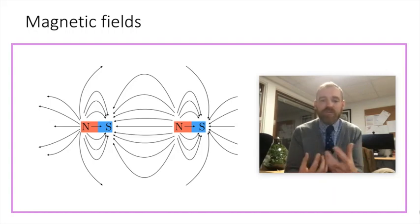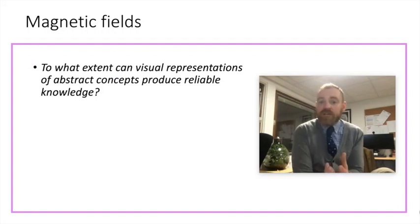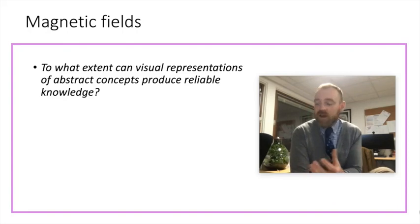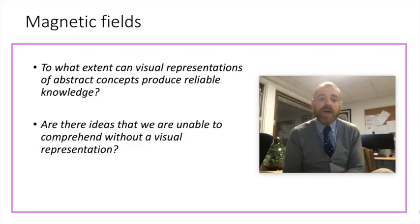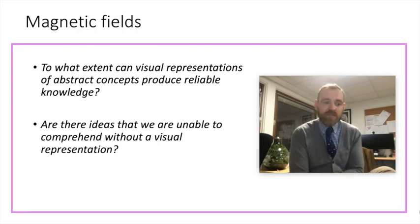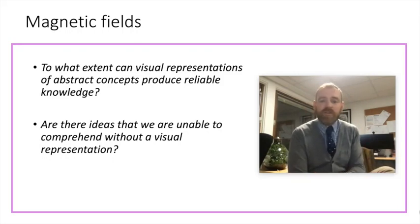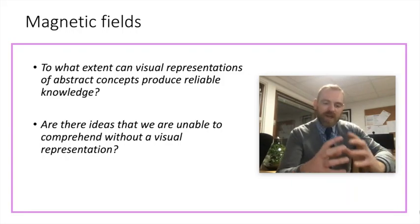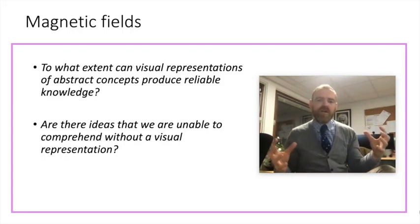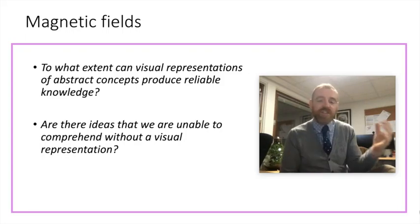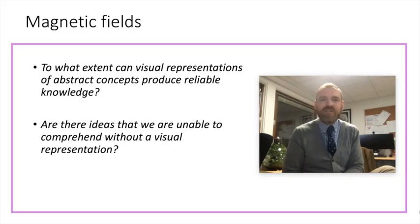So this is fantastic, we can extract some great questions from this and send the students away with those questions. So asking to what extent visual representations of abstract concepts can produce reliable knowledge is fantastic. Or we could flip that around and say, are there ideas which we are unable to comprehend without a visual representation? And from that point, you can then go further and say, well, what about ideas that it's impossible to represent visually? Does that mean it's impossible for us to understand? Questions about multiple dimensions would fit into this. So from that one example of a magnetic field, we've extracted some really quite big questions that can be related to all of science. And we can send students back to their TOK lessons with these questions to share with their classes.